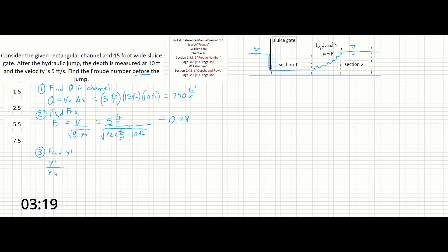Y₁ over Y₂ equals one-half times the quantity 1 plus 8 times the Froude number in section 2 squared, square root, minus 1. That's an annoying thing to solve but we can do it. So Y₁ over 10 feet equals one-half times 1 plus 8 times 0.28 squared, square root, minus 1. This is annoying to solve in your calculator, but if you do it right you should come out to a Y₁ of about 1.37 feet.